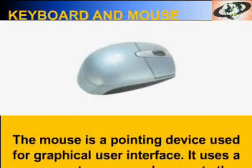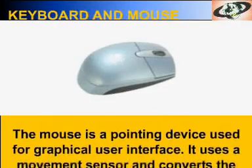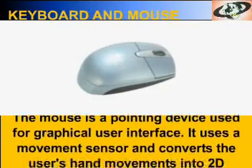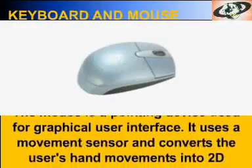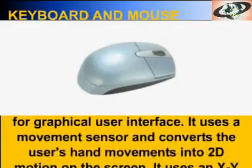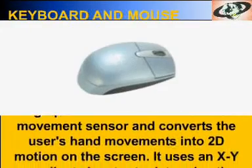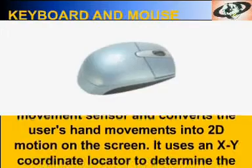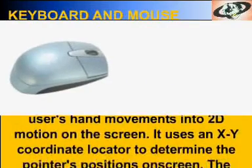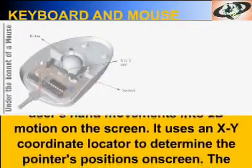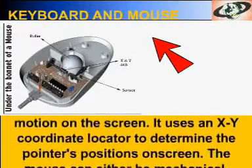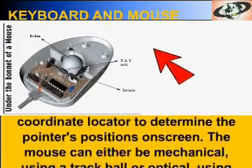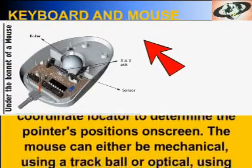The mouse is a pointing device used for graphical user interface. It uses a movement sensor and converts the user's hand movements into two-dimensional motion on the screen. It uses an XY coordinate locator to determine the pointer's position on screen.